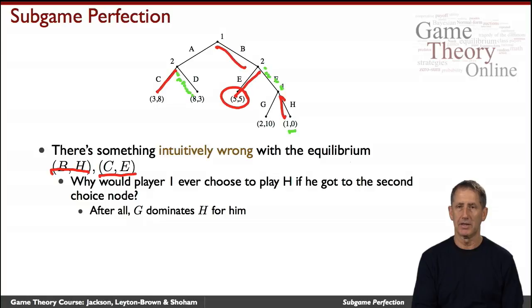So Player 2 cannot profitably deviate from their current strategy. What about Player 1, can they profitably deviate? They could go A rather than B, but then they will get a payoff of 3 rather than the 5 they're getting. They could also go down G over here, but given that Player 2 is going down E, that wouldn't matter. So neither player has a profitable deviation, and by definition, it's a Nash equilibrium.